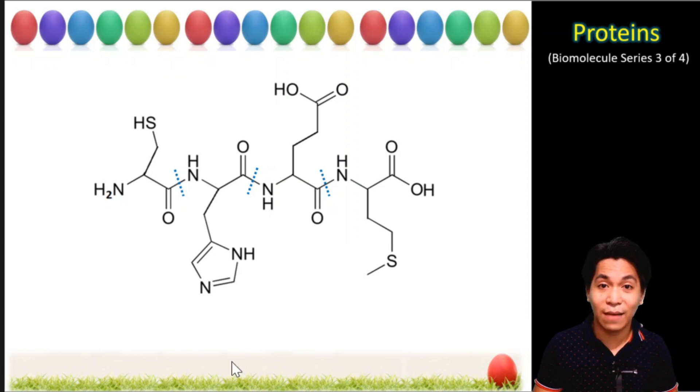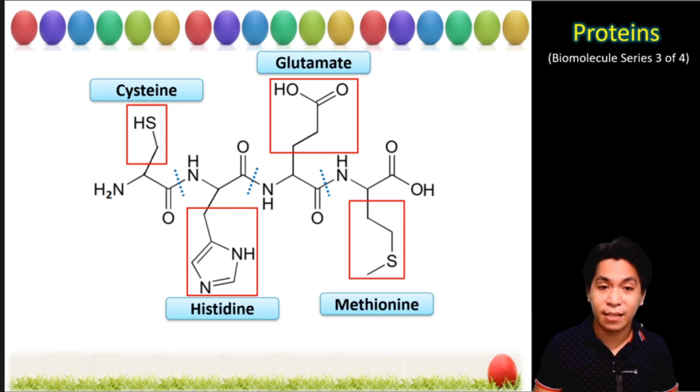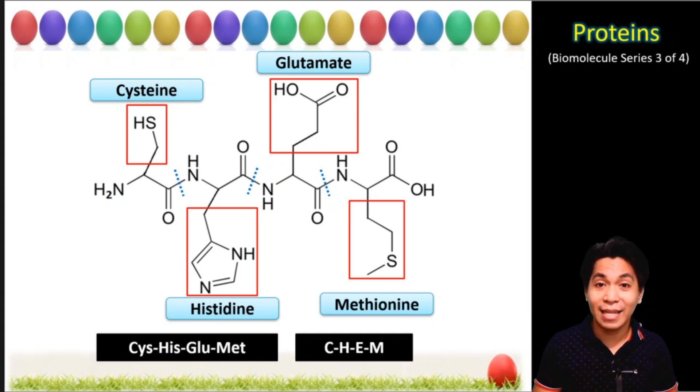In our example, we have a total of one, two, three, and four amino acids present. And their names are as follows: cysteine, histidine, glutamine, and methionine. And here is the sequence of the amino acids using their three-letter abbreviation and their one-letter symbol.